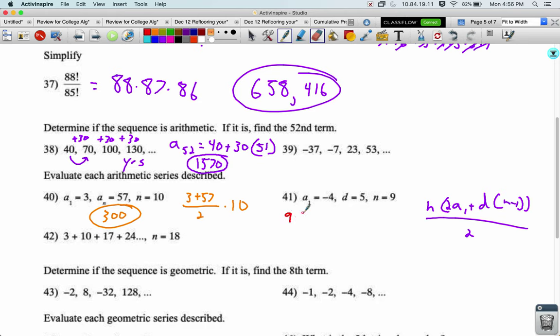Let's plug in what we've got. We've got n is 9 times 2 times negative 4, so negative 8, plus 5 times n minus 1, so 9 minus 1, so 8, all over 2. That's negative 32 plus 40. 2 times 9 is 288 divided by 2, we get 144.